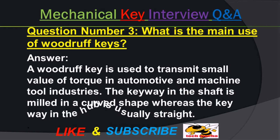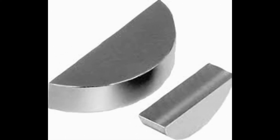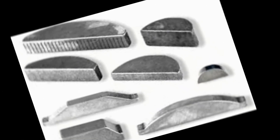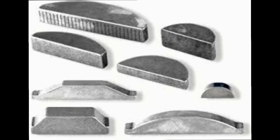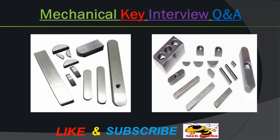Question number three: What is the main use of a Woodruff key? Answer: A Woodruff key is used to transmit small values of torque in automotive and machine tool industries. The keyway in the shaft is milled in a curved shape, whereas the keyway in the hub is usually straight.